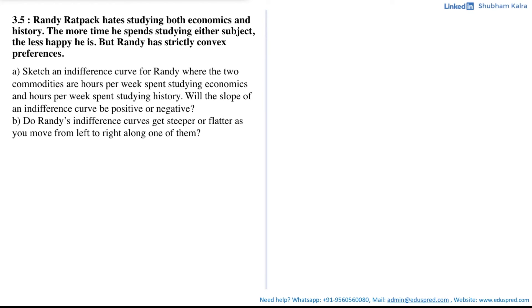In this video, we will be solving question 3.5 which says: Randy Rat Pack hates studying both economics and history. The more time he spends studying either subject, the less happy he is. But Randy has strictly convex preferences. Based on this information, we have two parts. Part A says: sketch an indifference curve for Randy where the two commodities are hours per week spent studying economics and hours per week spent studying history. Will the slope of an indifference curve be positive or negative? And part B says: do Randy's indifference curves get steeper or flatter as we move from left to right along one of them?